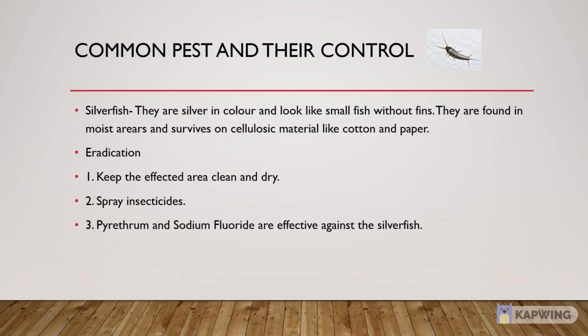Next common pest is Silverfish. They are silver in color and look like small fish without fins. You can also find them in moist areas near drainage, as well as on cotton and paper. Control methods: 1. Keep the affected area clean and dry. 2. Spray insecticide on the affected area. 3. Pyrethrum and sodium fluoride are also found effective against silverfish.